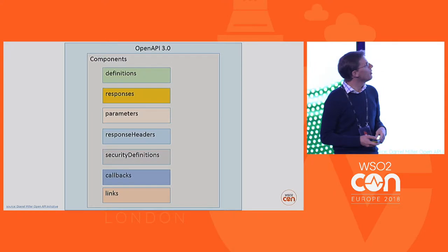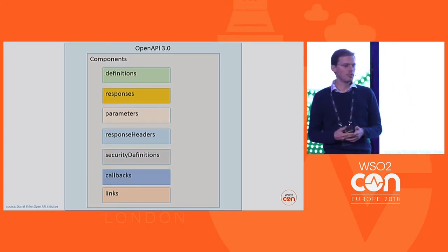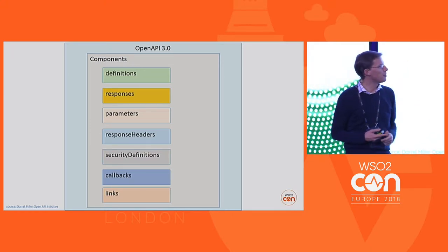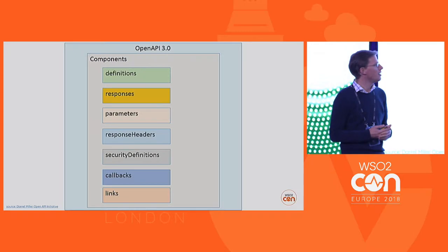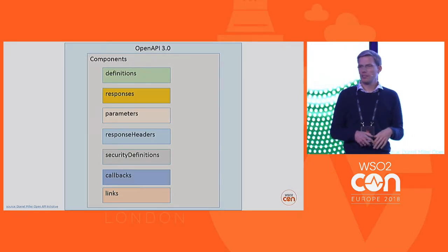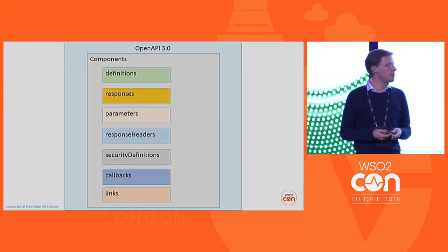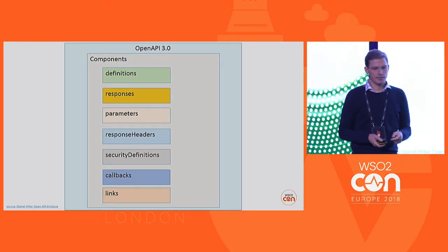Now, some more details about the new stuff. Definitions, responses, parameters, and security definitions are not really something new — they were also part of the old specification. They're just aggregated in the components section to have all reusable elements in one place. What's new is callbacks and links, which I'll show in more detail later.